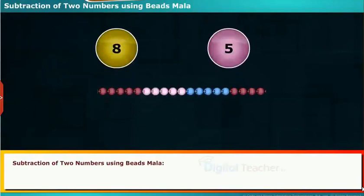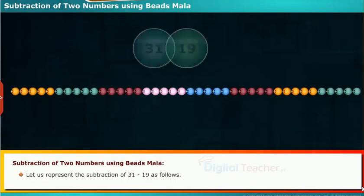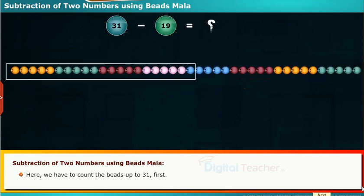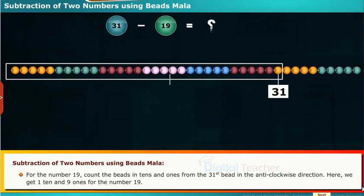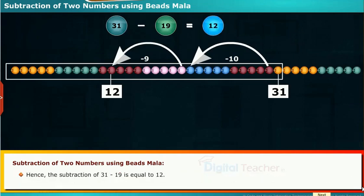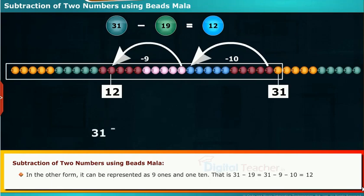Let us see the subtraction of 2 numbers using beads Mala. Let us represent the subtraction of 31 minus 19. Here, we have to count the beads up to 31. For the number 19, count the beads in 10s and 1s from the 31st bead in the anti-clockwise direction. Here, we get 1 ten and 9 ones for the number 19. Hence, the subtraction of 31 minus 19 is equal to 12. In another form, it can be represented as 9 ones and 1 ten. That is, 31 minus 19 equals 31 minus 9 minus 10, which equals 12.